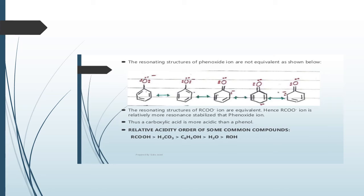First, let me give you the relative acidity order of some common compounds. Carboxylic acids are the strongest. Then comes H₂CO₃, then phenol, then water, and at the end is alcohol. So: carboxylic acid > H₂CO₃ > phenol > water > alcohol. Phenol comes after carboxylic acid in acidic behavior.